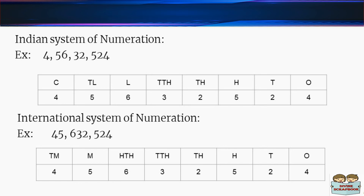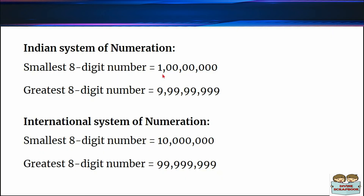In the Indian system of numeration, the smallest 8-digit number is 1,00,00,000, which we read as 1 crore. The greatest 8-digit number is 9,99,99,999, that is 9 crore 99 lakh 99 thousand 9 hundred and 99. In the international system of numeration, the smallest 8-digit number is 10,000,000.